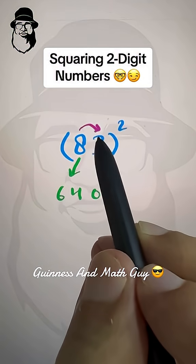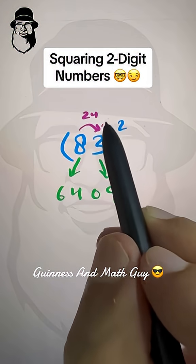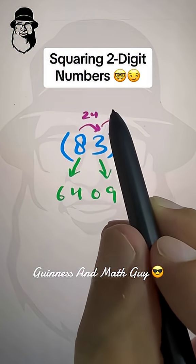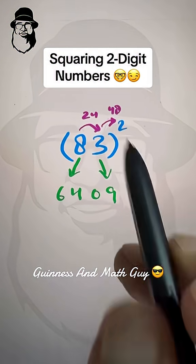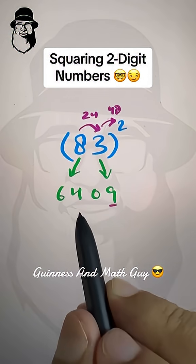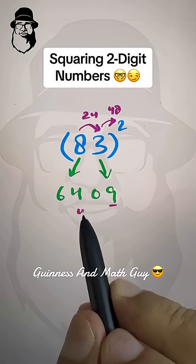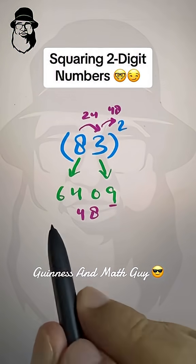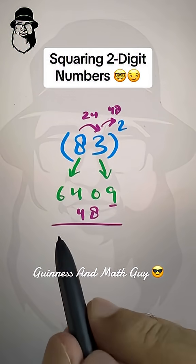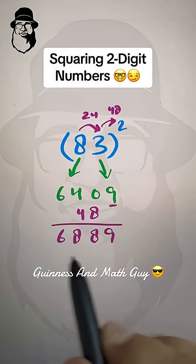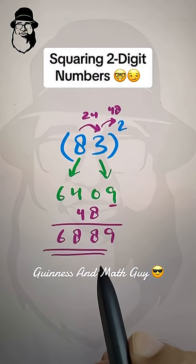8 times 3 is 24, then multiply by 2: 24 times 2 is 48. Leave one space from the right and write your answer there, and then add them: 6, 8, 8, 9 is your answer.